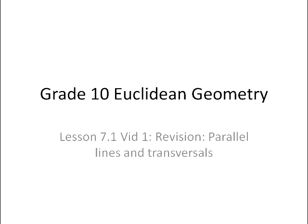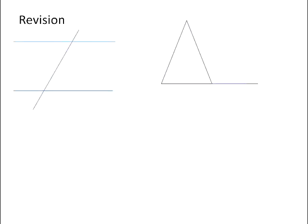Let's revise some of the geometry you learned in Grade 9. When we have a pair of lines, or one or more lines that are being cut by another line, we refer to the line that cuts across as the transversal.